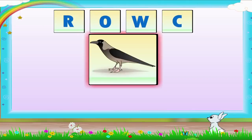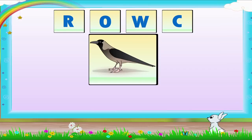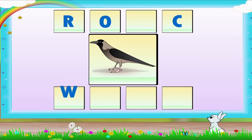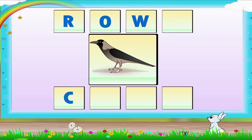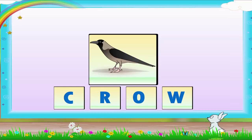Now, let us take the next picture. What bird do you see in the picture? It is a crow. Now, make the correct name from the jumbled letters for the second picture. The jumbled letters are R, O, W, C. Let us see how you have put the letters. No, Rainbow. The first letter will be C — C for crow. Then R, O, W. So, the word is crow.